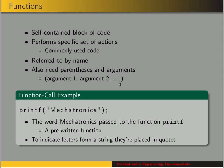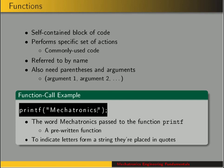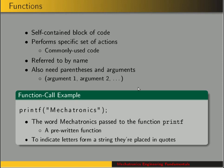Here's an example: the function printf, and then in parentheses the argument is 'mechatronics'. So 'mechatronics' is the argument passed to the function printf. Printf is a pre-written function — it writes to the screen, and its argument is the text that it's going to write. This function exists in a standard library, which we'll see in a minute.